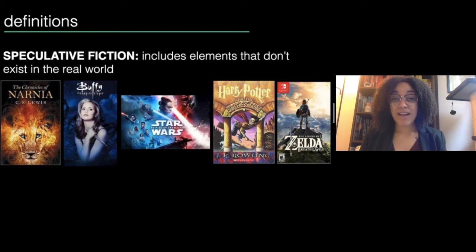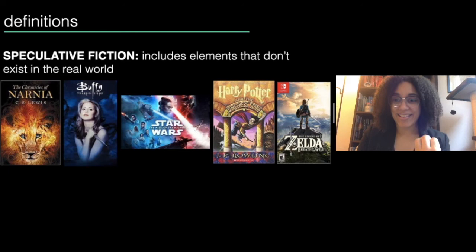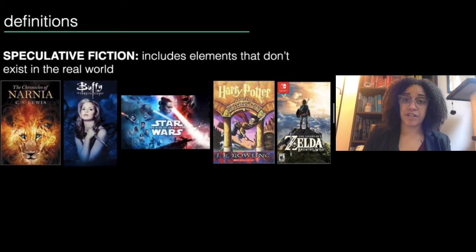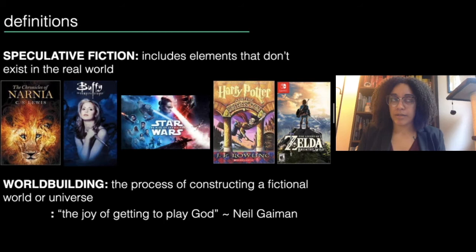Here are some examples of speculative fiction: Chronicles of Narnia, Buffy the Vampire Slayer, Star Wars, Harry Potter, the Legend of Zelda, Pokemon — all of these are speculative fiction. The really cool thing is that speculative fiction can cross media. It can be books, movies, TV, video games. Speculative fiction is anything that might not be considered realistic. And one of the things that sets it apart from other genres like historical fiction or memoirs is that it includes an element of something called worldbuilding.